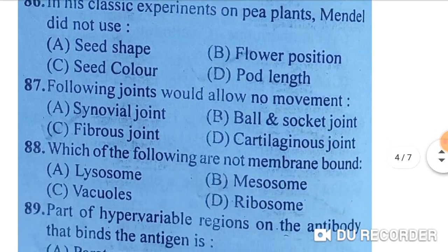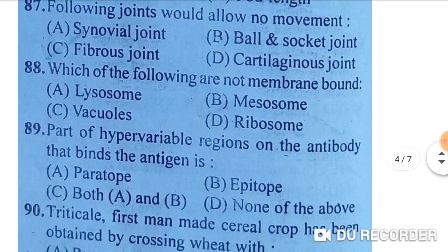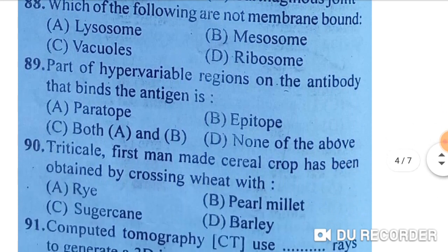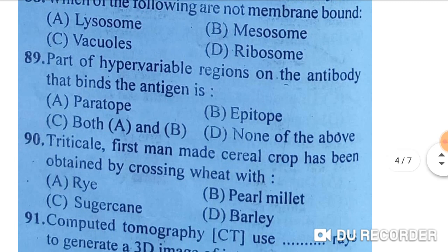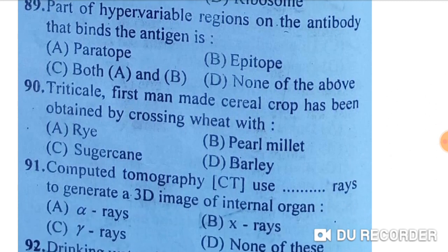In his classic experiments on pea plants, Mendel did not use pod length — option D is correct; he used seed shape, flower position, and seed color among others. Which of the following joints would allow no movement? Fibrous joint — option C is correct. Which of the following are not membrane-bound? Ribosomes are not membrane-bound — option D is correct.